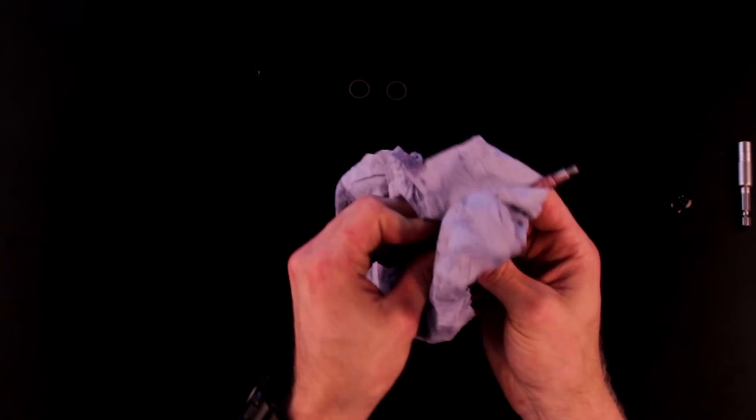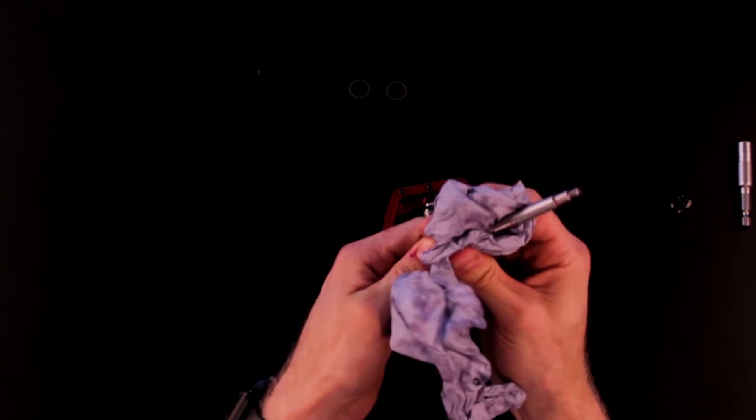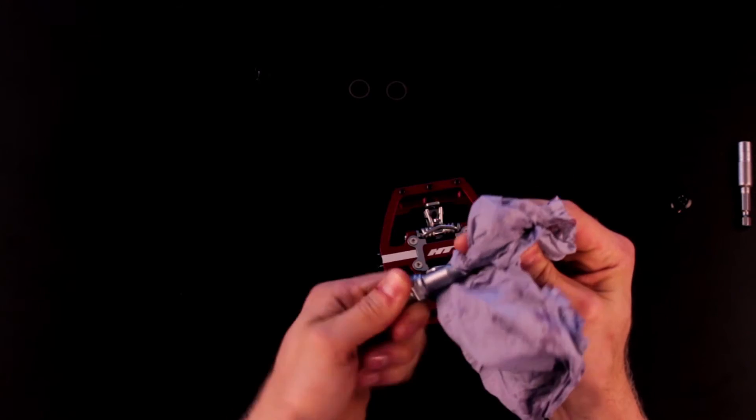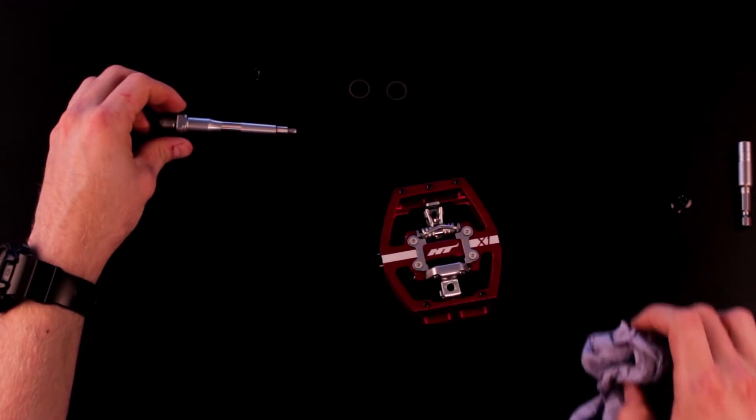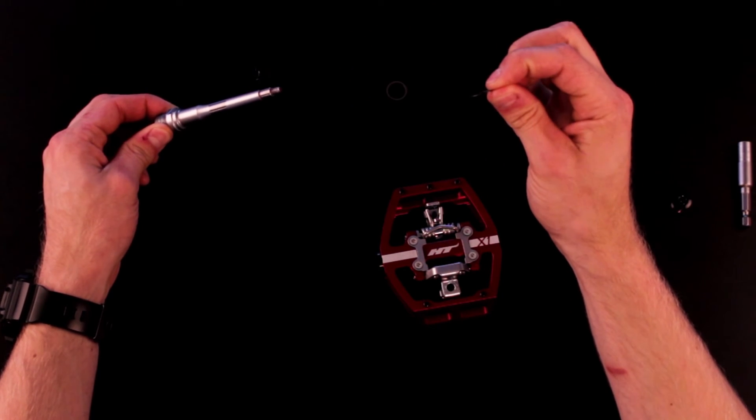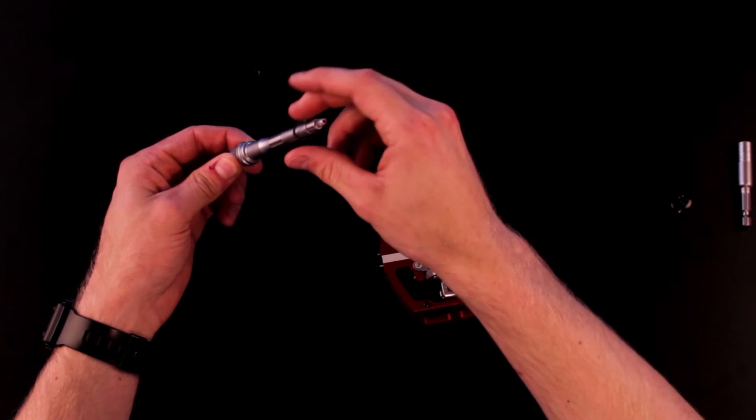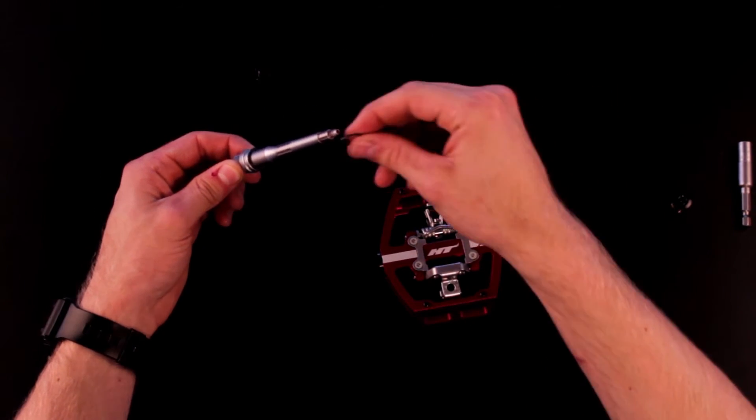Now we'll clean the axle. Remove any dirt, grit or grease on the axle. At this stage we're going to reapply the two washers—first of all the slim rubberized one, then the metal, slightly thicker one.